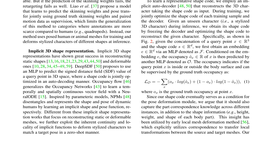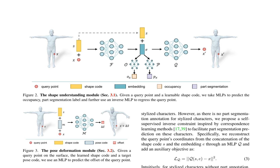The proposed method uses posed human or animal meshes for training and deforms stylized characters of different shapes at inference. The shape understanding module employs an implicit autodecoder to reconstruct the 3D character, taking the shape code as input. The module is jointly optimized with the decoder during training, and the shape code is optimized to reconstruct the given character during inference. The module also predicts a part segmentation label for each surface point, supervised by ground truth labels during training.